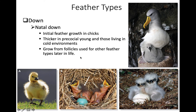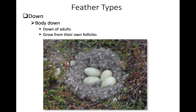Natal down grows from follicles spread all over the body, including follicles later used for other purposes. In adults, body down grows from its own follicles, and the amount varies with habitat: arctic or subarctic species have a lot of down for warmth, while tropical species tend to have little down or semi-plumes. Some northern ducks like eiders actually pluck their own breast down to line the nest for insulation, and this also exposes the brood patch for more efficient heat transfer to eggs.